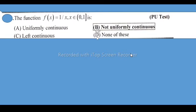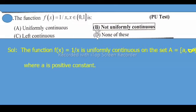x belongs to interval [0,1] is - option B is correct - not uniformly continuous. Solution: The function f(x) = 1/x is uniformly continuous on the set A = [a, ∞) where a is positive constant. Option B is correct, which is the required solution.